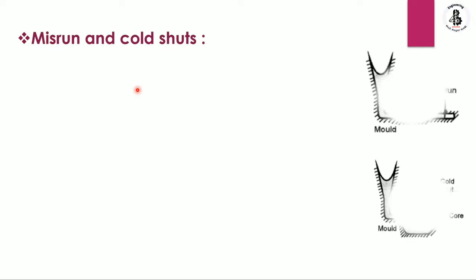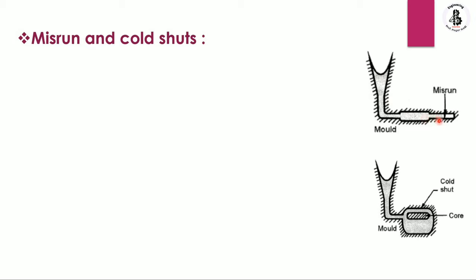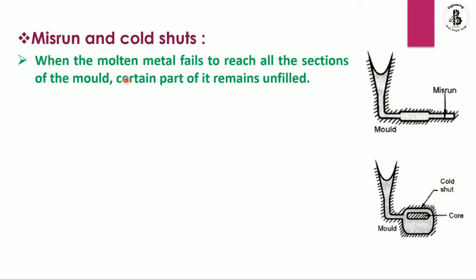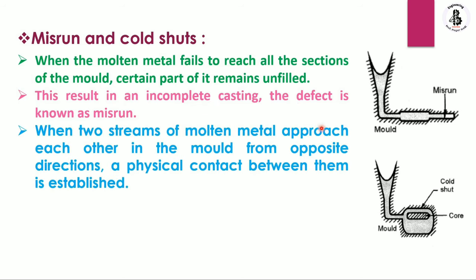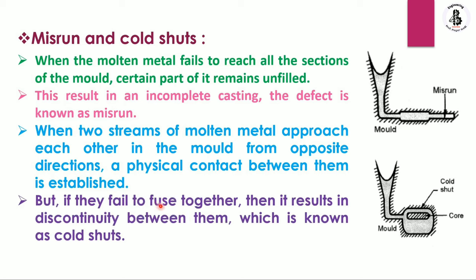Next are misruns and cold shuts. When the molten metal fails to reach all sections of the mold, certain parts remain unfilled, resulting in an incomplete or partially filled casting — this defect is known as a misrun. When two streams of molten metal approach each other from opposite directions in the mold, physical contact is established, but if they fail to fuse together, a discontinuity results — this is known as a cold shut.